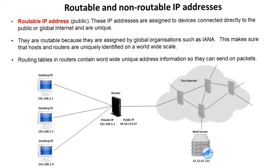They are routable because they're assigned by global organizations, and this makes sure that hosts and routers are uniquely identified on a worldwide scale. Routing tables in routers contain worldwide unique addresses so they can send information and send packets to their destination.